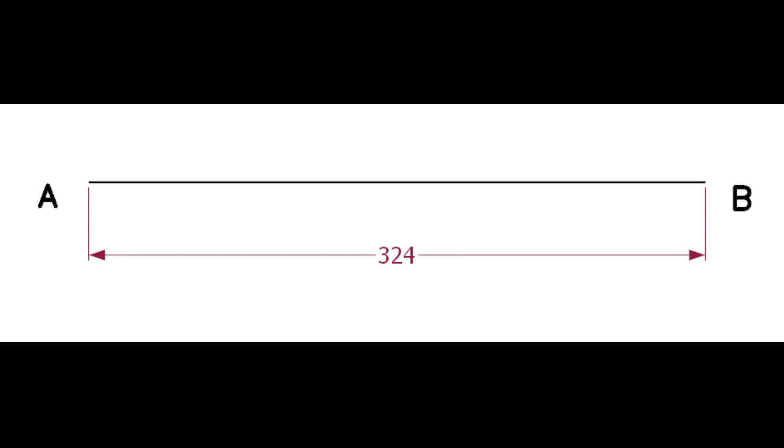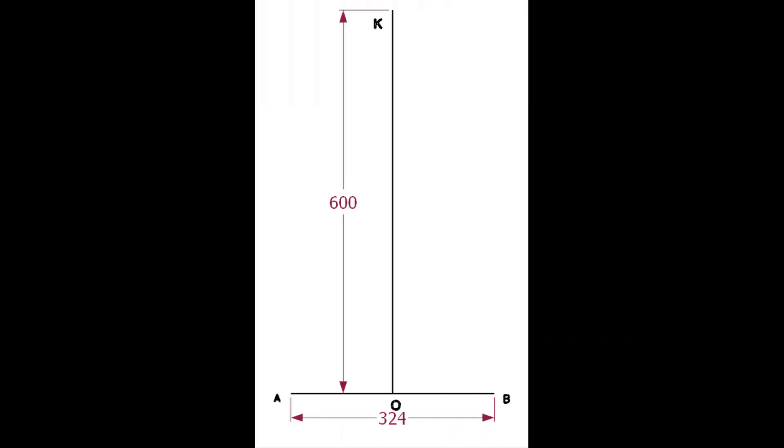Draw a line AB of length 324 millimeters, that is the OD of the pipe. Draw the line OK. The length of the line is not important, but must be more than the pipe diameter.